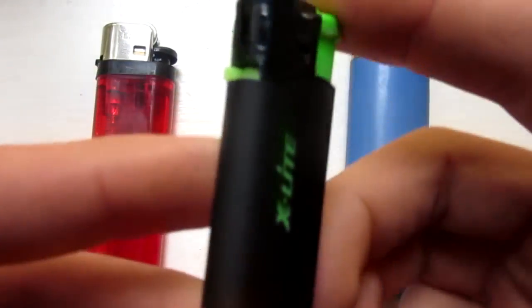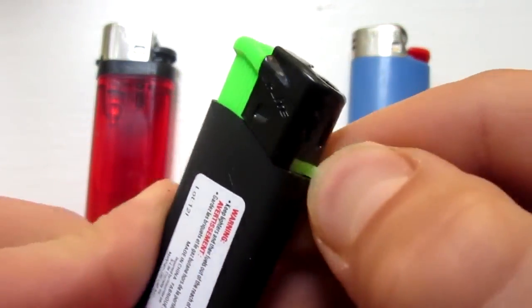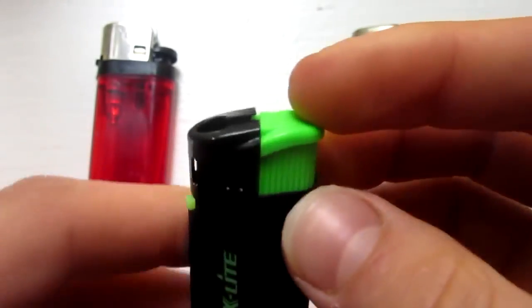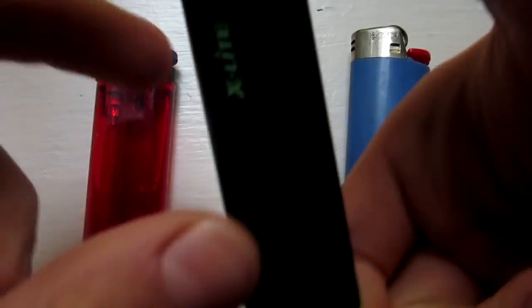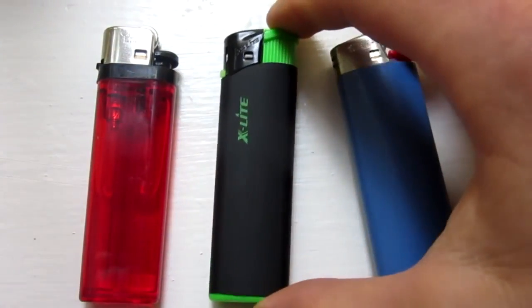Now, other lighters do have the adjustable knob, like this one here called X-Lite, and it does still work pretty good. Not as good as the other one, but if it has the knob, it will work.